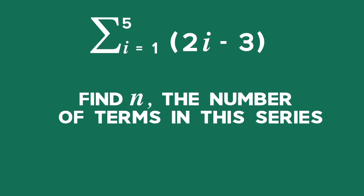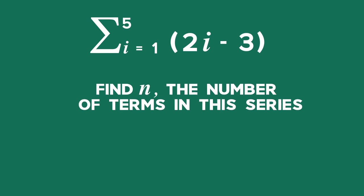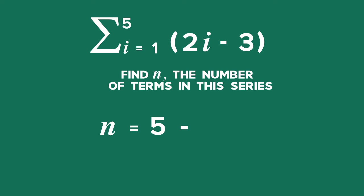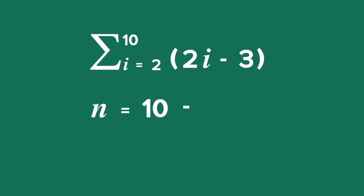In general to find n, the number of terms in this series, all we do is subtract the starting number from the n value and then add 1. Top minus bottom plus 1. So the number of terms to add in this sequence is 5. Let's work out the number of terms using another example. Given the sum of all terms from 2 to 10 of 2 times i minus 3, the number of terms will be 10 minus 2 plus 1 equals 9.